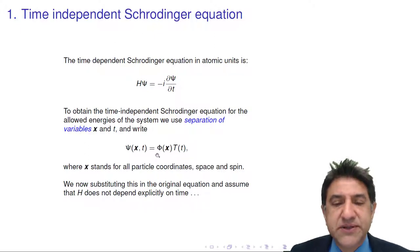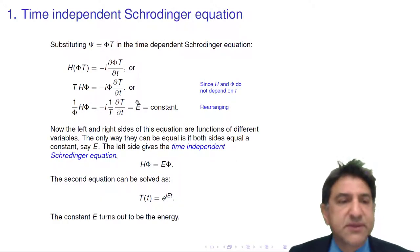And if we do this separation, it turns out that this equation simplifies into two parts. So we substitute that in. So here we go: H times ψ, which is φ times T, equals minus i times dψ by dt, which is φ times dT by dt.